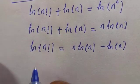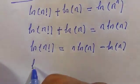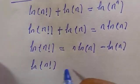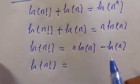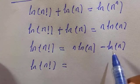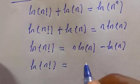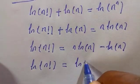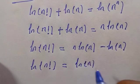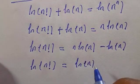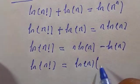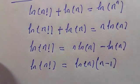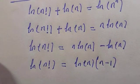The next step is to factorize. Since ln is common, we factor it out: ln of n factorial equals ln(n) times (n minus 1).